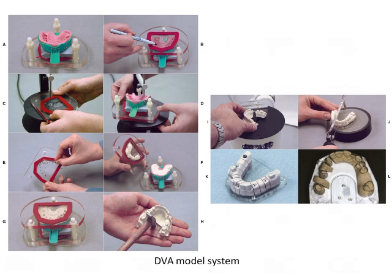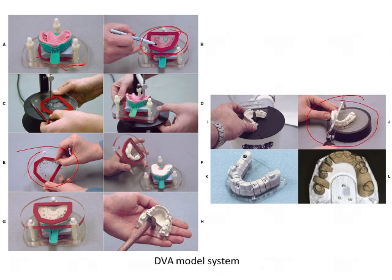The next system is the DVA model. Here the alginate impression is trimmed and placed on a fixture. You locate and place the dowel pins directly on the impression before pouring. After pouring, you section the dies and pour the base to obtain the final cast. This is the DVA model system.